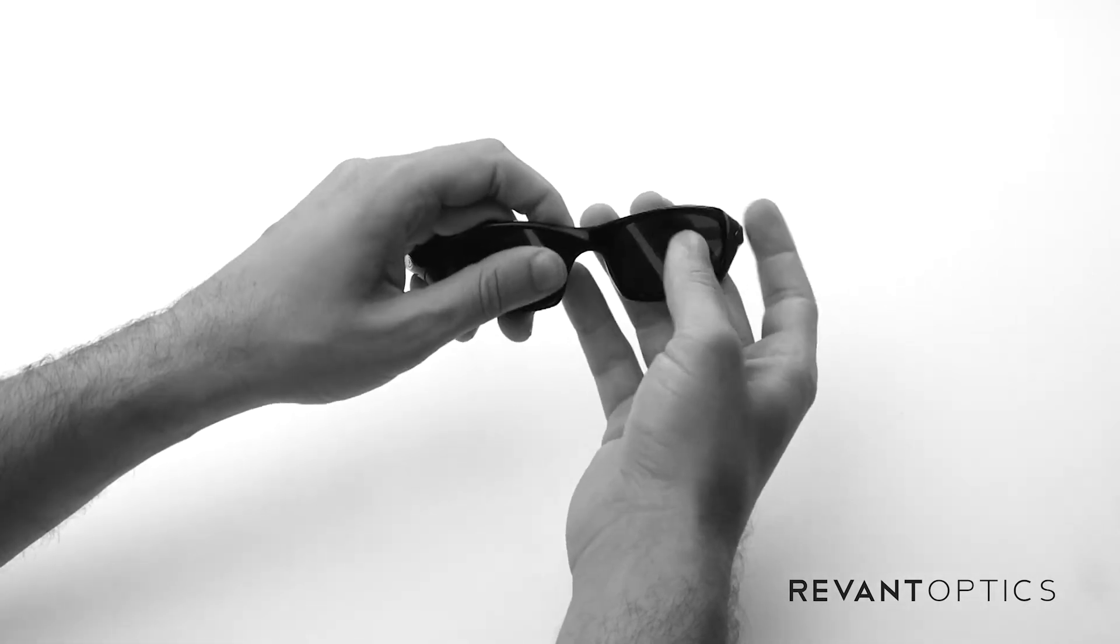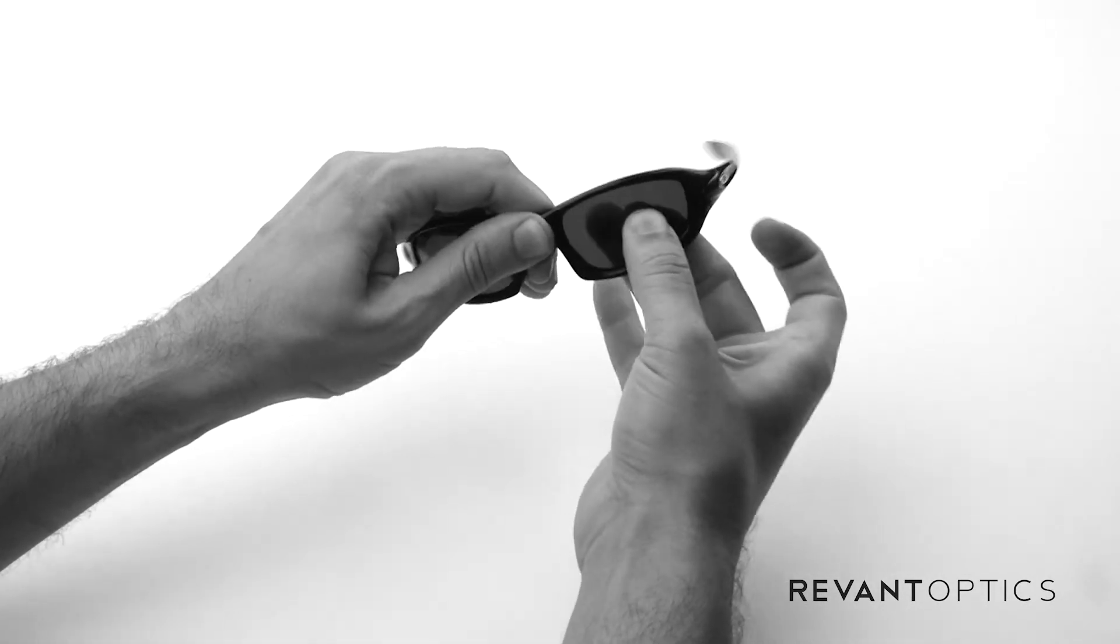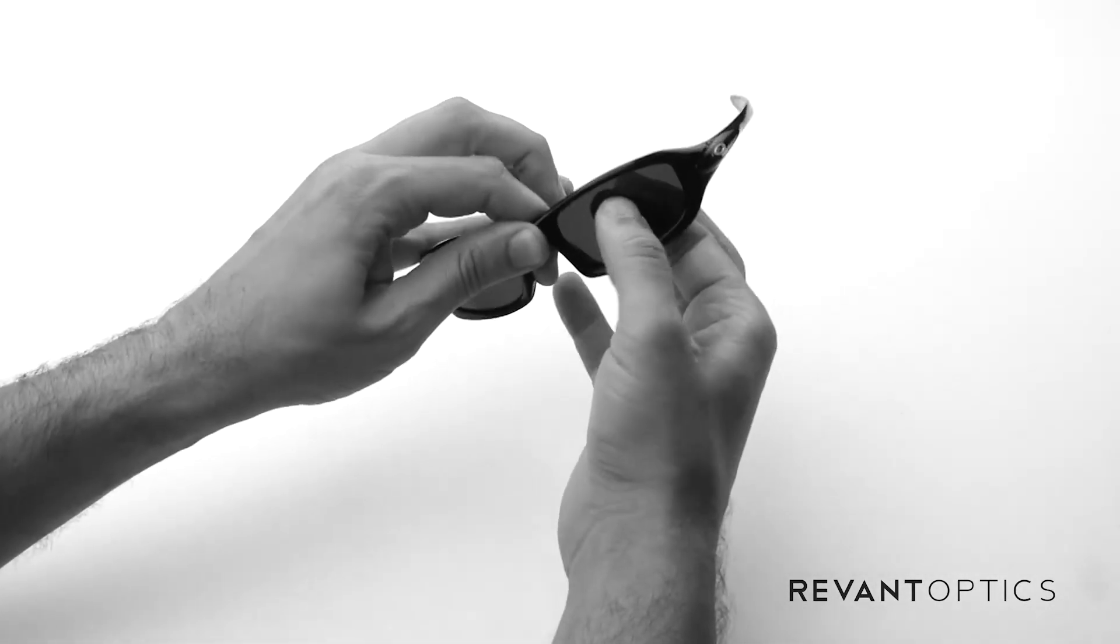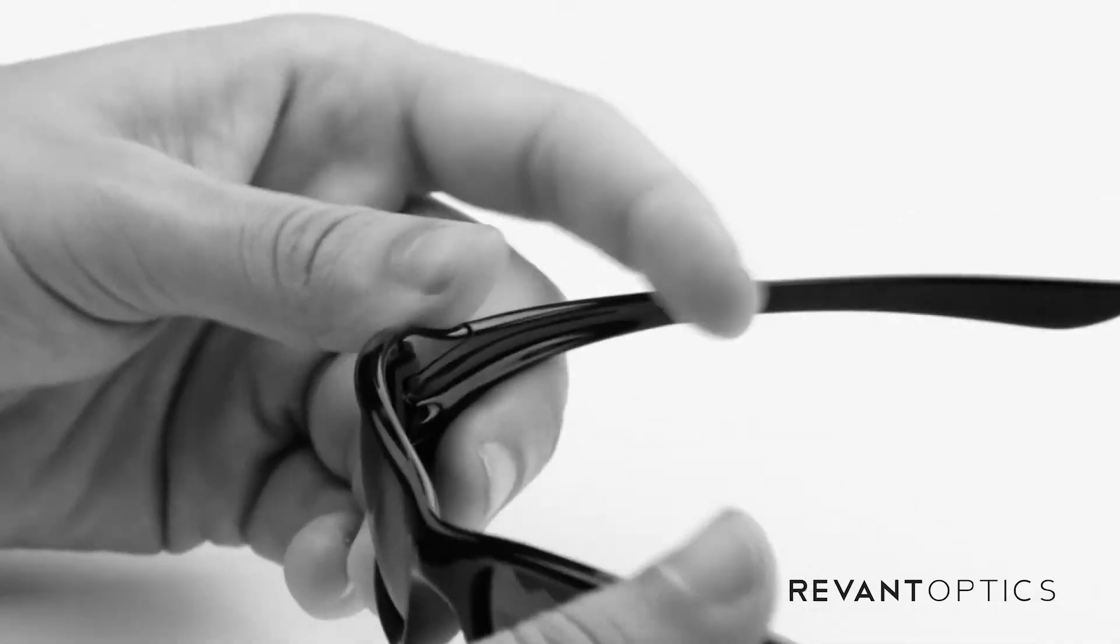Once you've done that, just go around the outside of the lens here and make sure that it is secure. You can kind of pull back and forth there. Make sure it's snugly fitting in there.